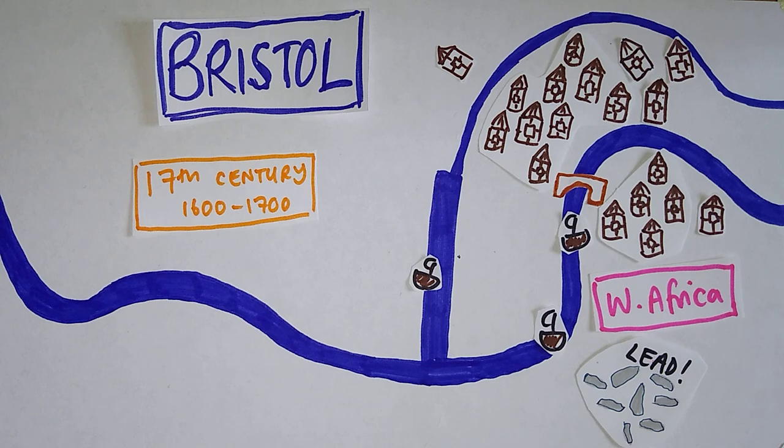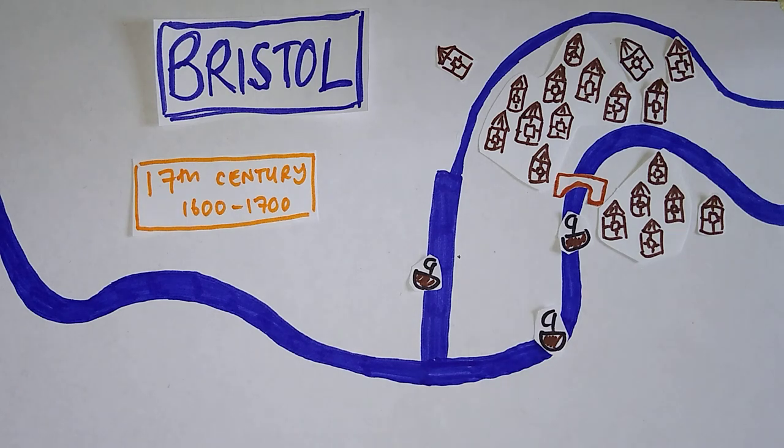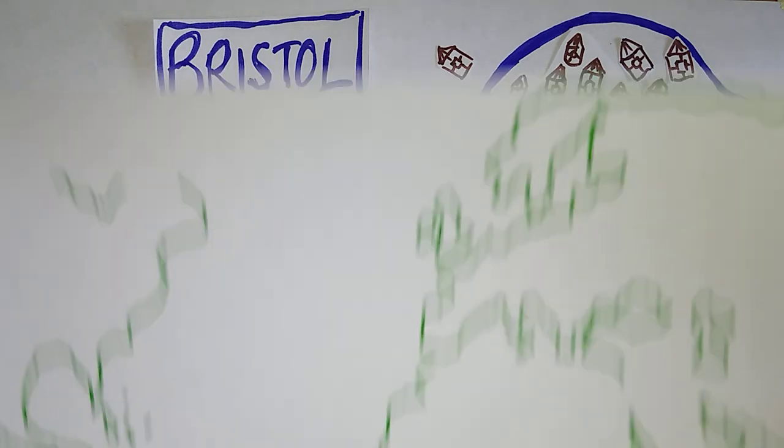The 1690s, though, bring a huge change. A huge change. Because that monopoly that London has over the slave trade goes. And Edward Colston comes to the city and encourages Bristol merchants to start getting involved in the slave trade. Now, let's do them out and let's look at what the slave trade was.